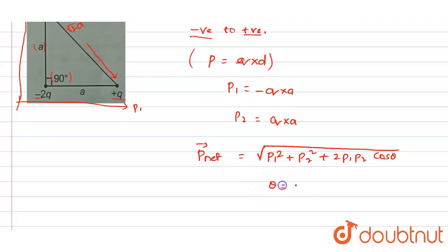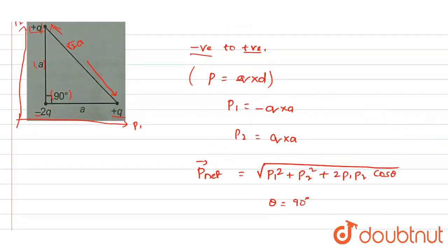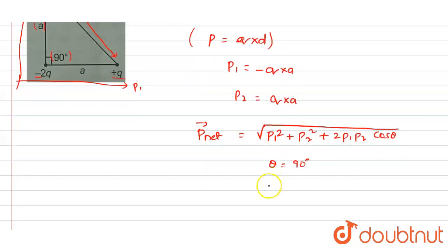Here the theta value is 90 degrees because in this particular diagram we have the angle as 90 degrees. Then P_net vector will be equals to √(p1² + p2²).